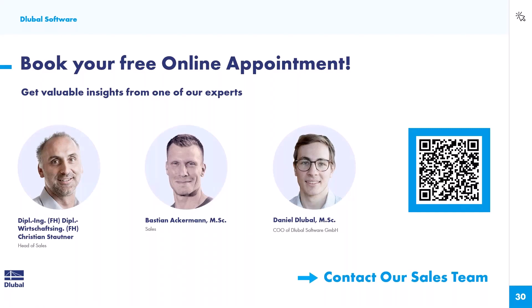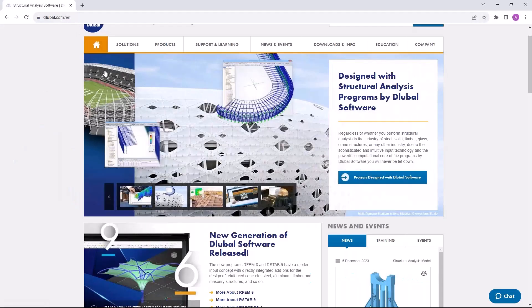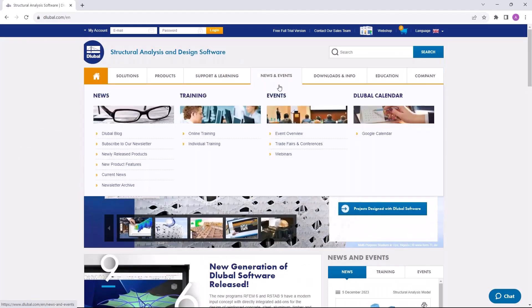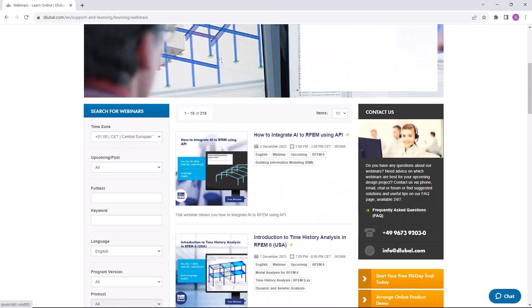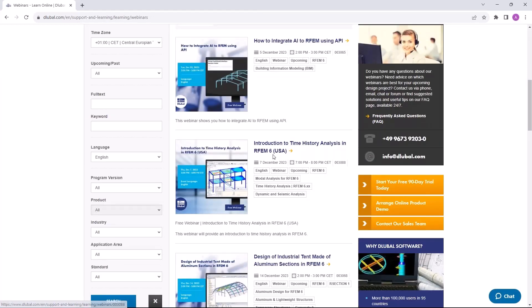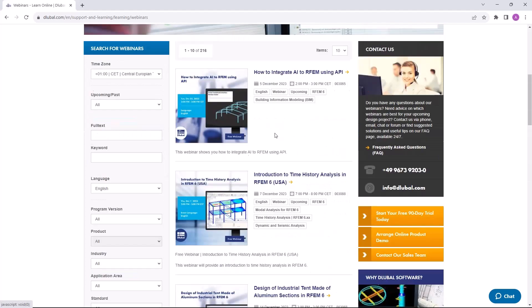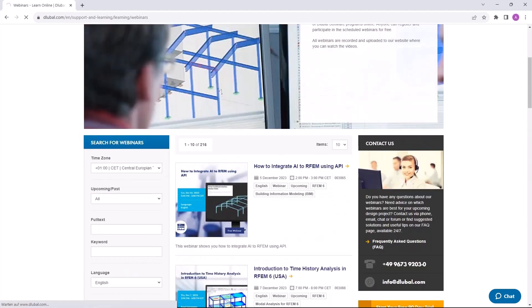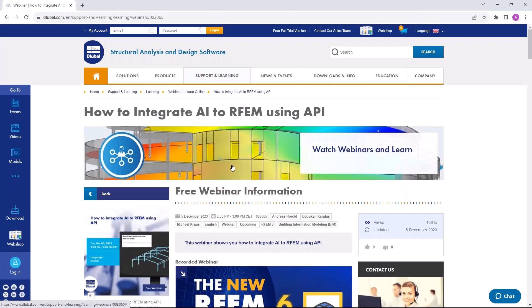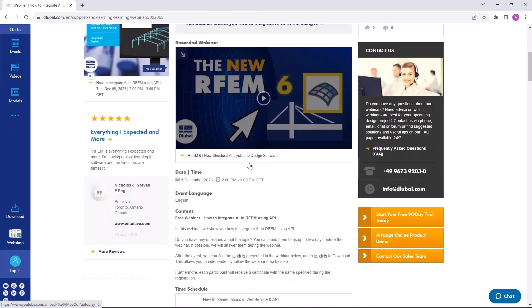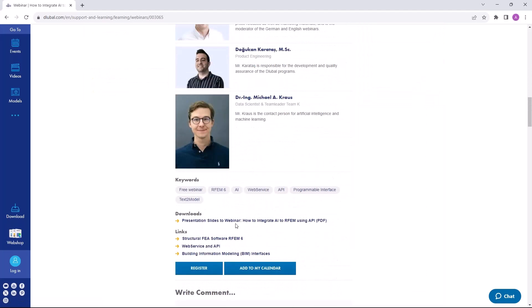So then I show you the website, dlubal.com, and under news and events, you can find our webinars. You will also get an email when the recording is online with a direct link to that page, and then you will find the recording in the middle. You can already download the PowerPoint slides as a PDF file.